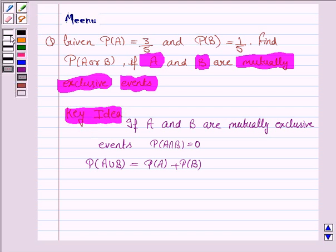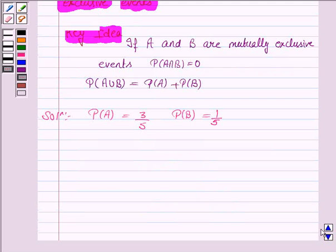Let us now move on to the solution. We are given that probability of A is 3 by 5 and probability of B is 1 by 5. Now we have to find probability of A or B. A or B means either A or B or both. That is, it is same as probability of A union B.